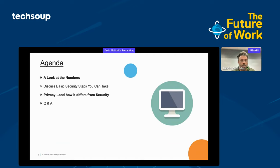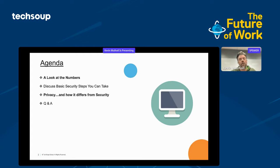Here's a quick agenda of what I'm going to be overviewing. I'll start by looking at the numbers around phishing and ransomware — the numbers don't lie, and they're actually a little bit concerning. Then I'll move into basic security steps around the areas where you can most easily engage with your applications and technologies. I'll then switch the discussion to privacy and how privacy differs from security. They do go hand in hand to a degree, but they can and should also be treated as separate components. Then we'll open up to Q&A.